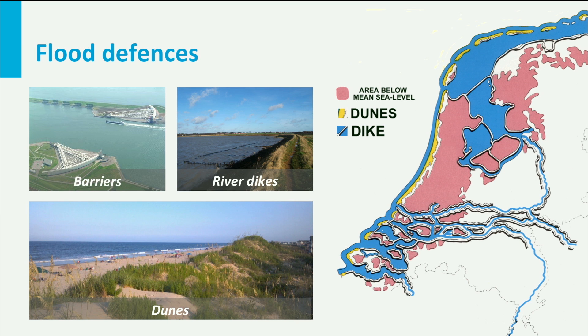Various structures can form a dike ring together. An example is the dike ring around South Holland. It consists of sand dunes, a storm surge barrier, and river dikes. In addition to flood defence structures, measures such as room for rivers or retention can be applied to reduce water levels on the outside.